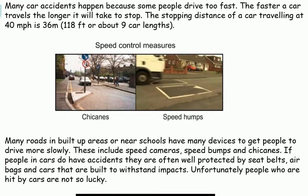Many roads in built-up areas or near schools have devices to get people to drive more slowly. These include speed cameras, speed bumps and chicanes. If people in cars do have accidents, they are often well protected by seatbelts, airbags and cars that are built to withstand impacts. Unfortunately, people who are hit by cars are not so lucky.